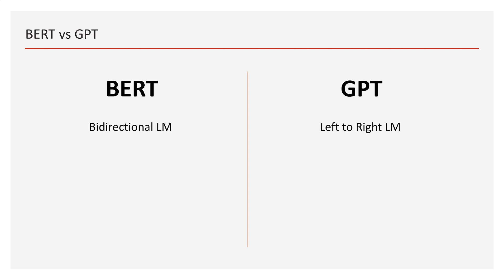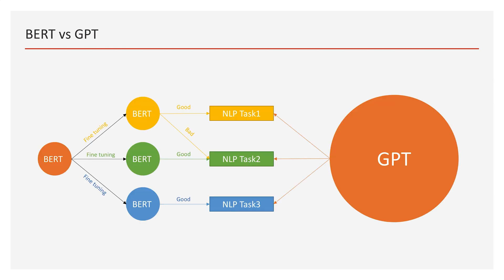Now we understand pre-training of BERT. Before we go to fine-tuning, let's brush up on the main differences between GPT and BERT. First, BERT is a bidirectional language model, while GPT is a left-to-right language model. Second, BERT is meant to be fine-tuned, while GPT is not. Pre-trained GPT works well on multiple NLP tasks without fine-tuning, but it is very large. BERT is smaller and needs particular fine-tuning for each NLP task. Fine-tuned BERT is good on its specific task but may perform poorly on others. Training GPT is very expensive, but once well-trained it can be reused for multiple use cases. Training BERT is relatively cheaper, but you must fine-tune the pre-trained BERT for your use case.